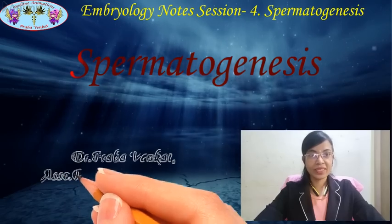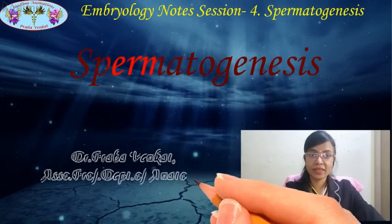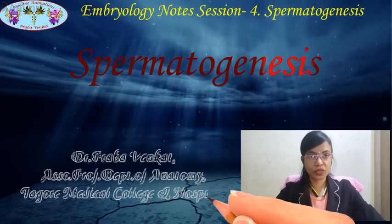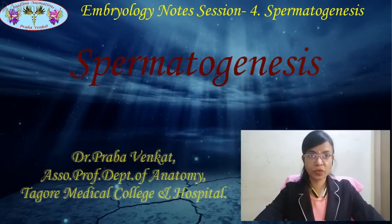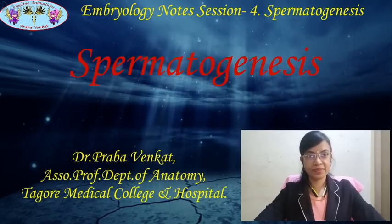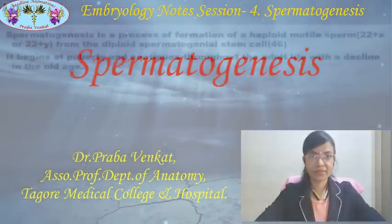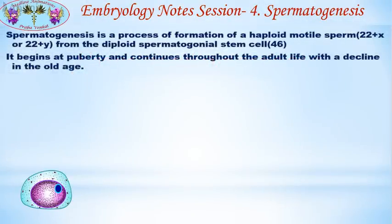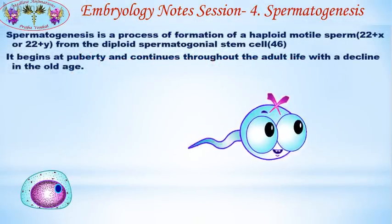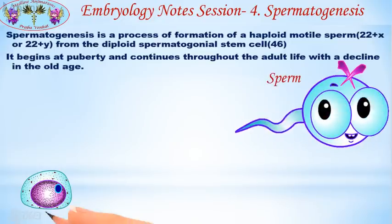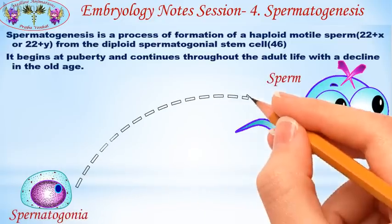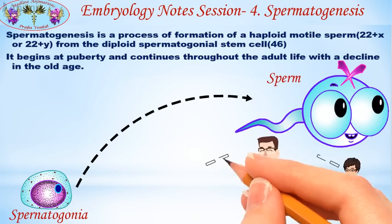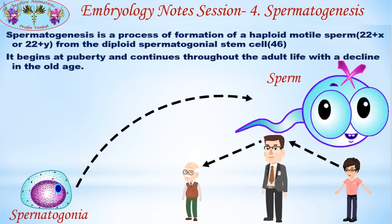Good day all. This session is for notes on spermatogenesis — the process of formation of a mature sperm from spermatogonia. Spermatogenesis is a process of formation of a haploid motile sperm from the diploid spermatogonial stem cell. It begins at puberty and continues throughout the adult life with a decline in old age.